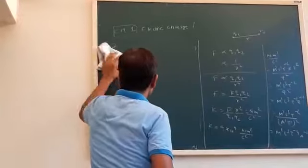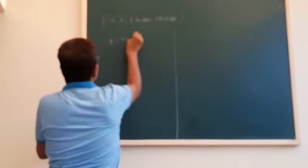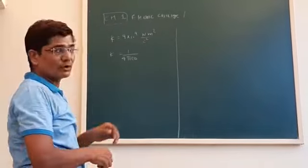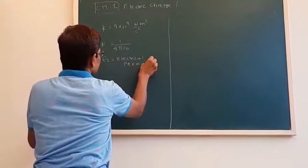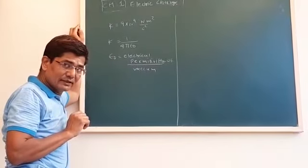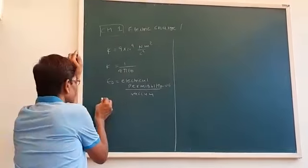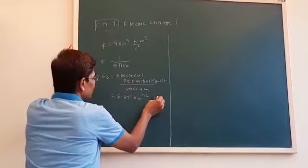What is the meaning of electrostatics? Here we study the force and charges which are at rest. K is 9 × 10⁹ N·m²/C², and K = 1/(4πε₀). Here ε₀ is a new quantity — it is called the electrical permittivity of vacuum. Its value is 8.85 × 10⁻¹² Coulomb² per Newton·meter².